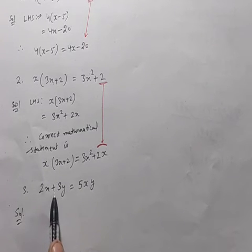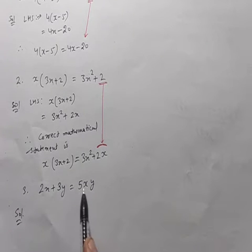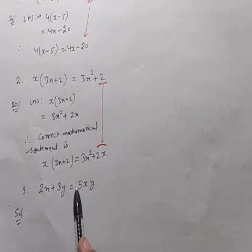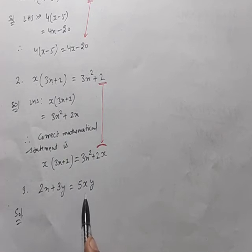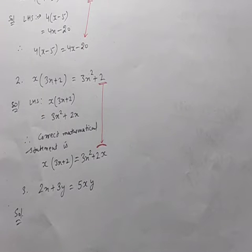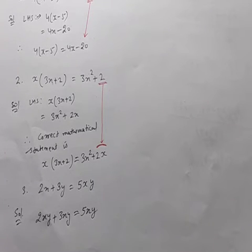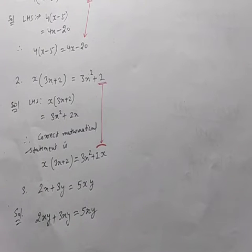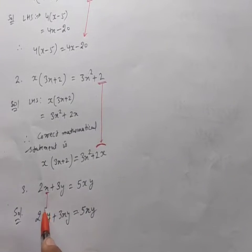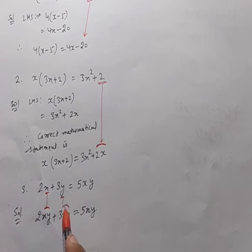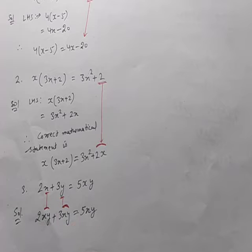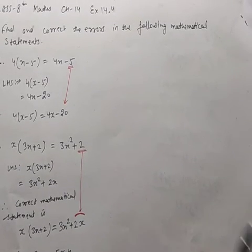Question 3: 2x+3y = 5xy is given. But these two are unlike terms — 2x and 3y cannot be added to give 5xy. To make the statement correct, we write 2xy+3xy, so both terms become like terms, and 2xy+3xy = 5xy. So x is replaced by xy and y is replaced by xy.